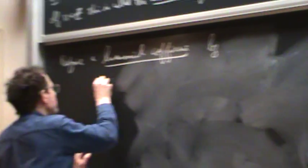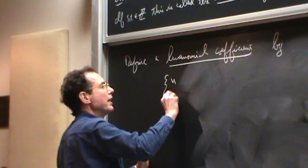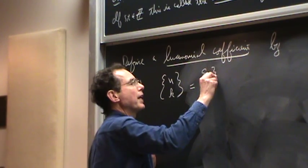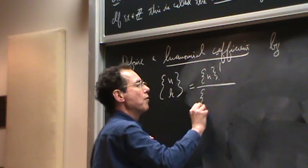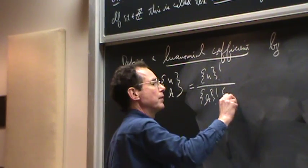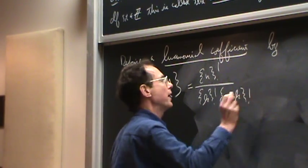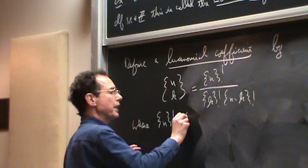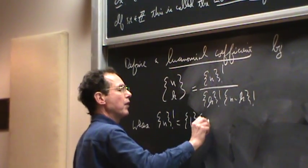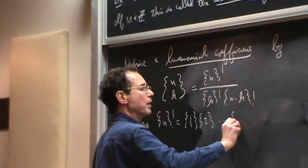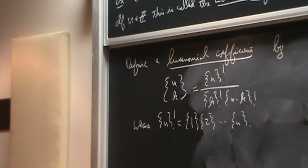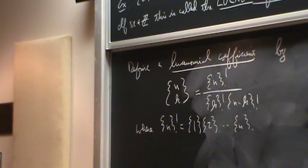So the definition is, this is going to be curly brackets n choose k. And I'm going to define it by taking curly brackets n factorial, over curly brackets k factorial, times (n-k) factorial. Whereas, you might expect, curly brackets n factorial just means take the product of the polynomials from one up to curly brackets n. So it's like a fibonomial. And that's why we leave out the s, because you don't say Fibonacci with an s, you don't say Fibonacsi.